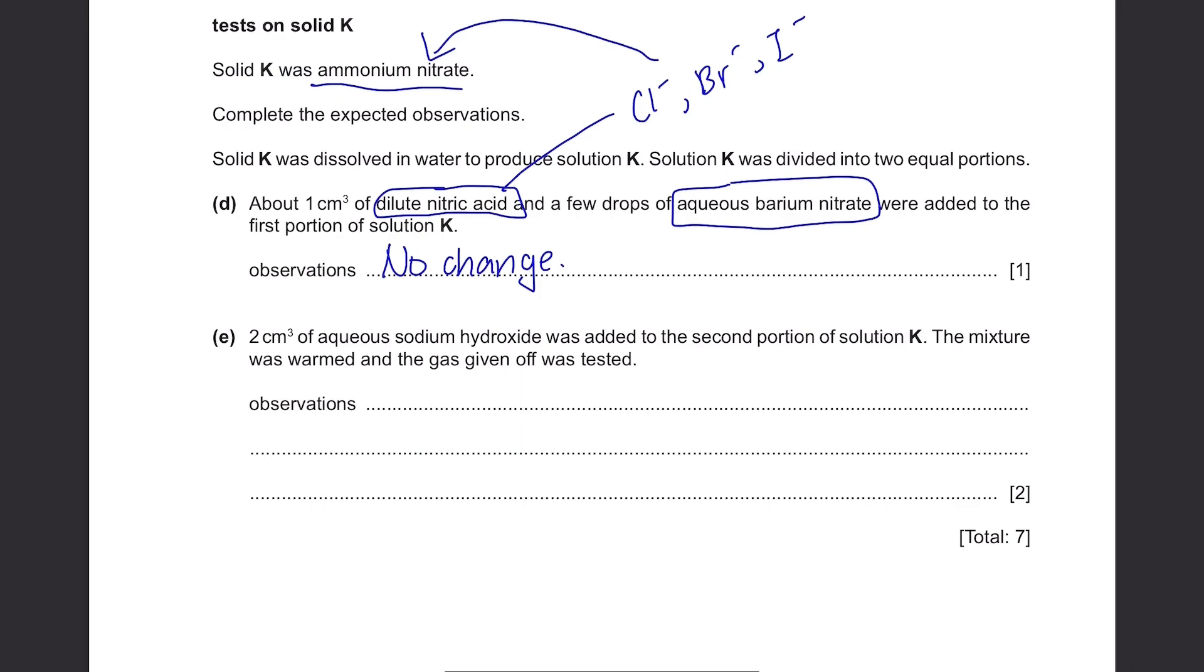Part E. 2 cm cubed of aqueous sodium hydroxide was added to the second portion of solution K. The mixture was warmed and the gas given off was tested. If you add sodium hydroxide to ammonium nitrate and warm it, ammonia gas will be produced. And although they didn't specify how they're gonna test it, they're gonna use red litmus paper to test it. And since ammonia gas is a basic substance, the red litmus paper will turn blue.